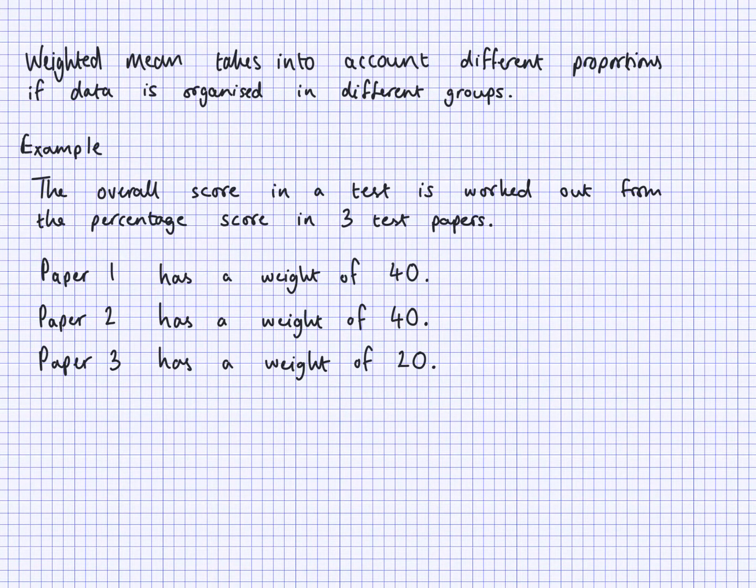Here's our first example. The overall score in a test is worked out from the percentage score in three test papers. Here we have paper 1, paper 2, and paper 3. They have different weightings. Paper 1 and paper 2 have a weighting of 40 each, and paper 3 has a weighting of 20.